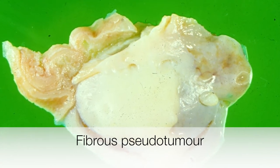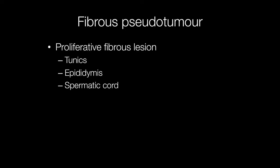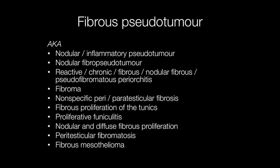This is an example of a paratesticular fibrous pseudotumour. This is a proliferative fibrous lesion that may arise on the tunica albuginea, tunica vaginalis, epididymis, or spermatic cord. Another term frequently used for this lesion is fibrous periorchitis, but there are numerous other terms such as proliferative funiculitis, fibrous proliferation of the tunica, and nodular and diffuse fibrous proliferation, to name just a few.